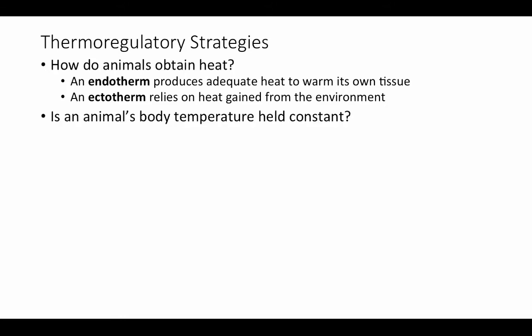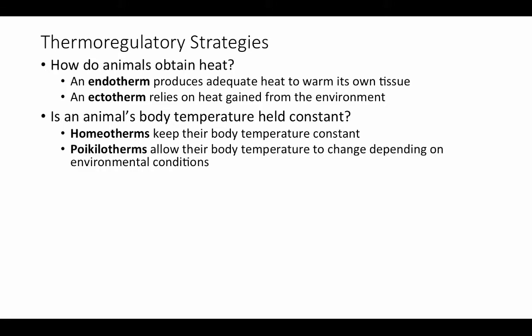Another axis of variation is whether an animal's body temperature is held constant. Animals that must keep their body temperature at a very constant level are called homeotherms. Animals that can tolerate larger fluctuations in body temperature are called poikilotherms — they allow their body temperature to change depending on environmental conditions. Importantly, these two axes are not necessarily tied to one another: a homeotherm is not necessarily an endotherm, and a poikilotherm is not necessarily an ectotherm.